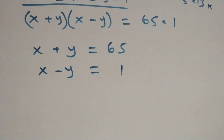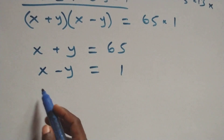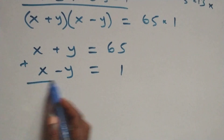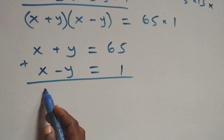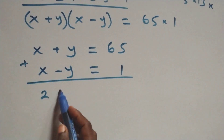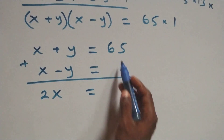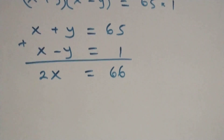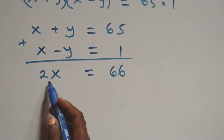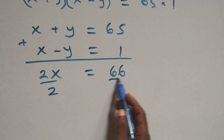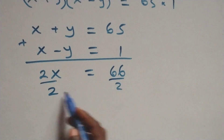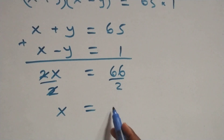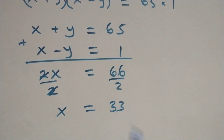Solving these two equations simultaneously, we add them to eliminate y: x plus x gives 2x, which equals 65 plus 1, that's 66. Dividing both sides by 2, we get x equals 66 over 2, which is 33.